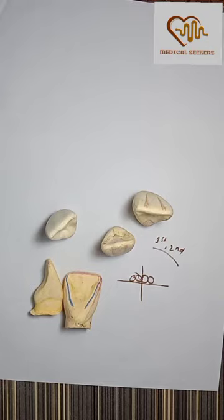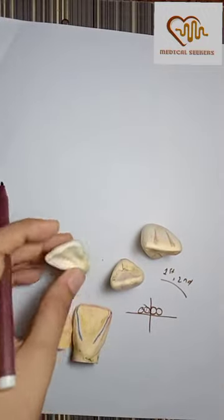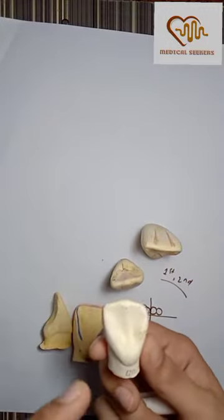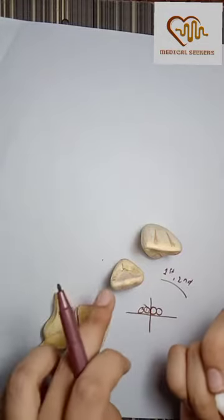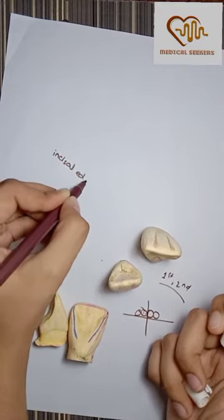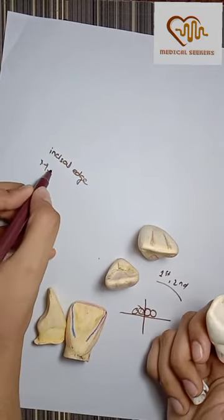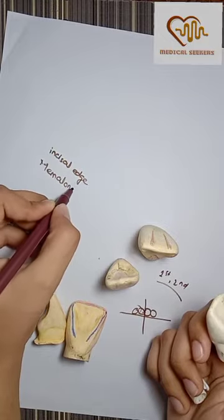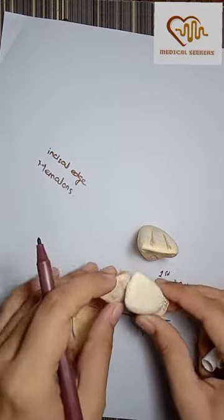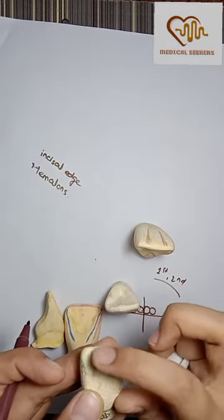If we talk about the prominent features, we talk about the incisal edge. I have told that anterior incisal edge is incisal edge. Then we talk about the mammelons. I have told the mammelons in the last lecture about the mammelons. This is the rounded projections in incisal edge.